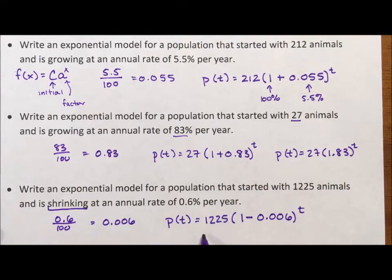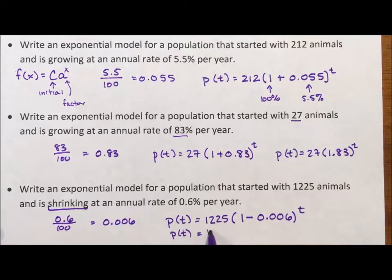We could have rewritten this as p(t) = 1225 times 0.994 to the t.